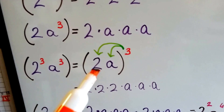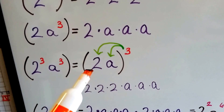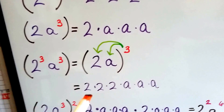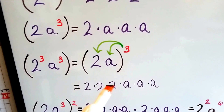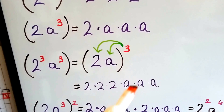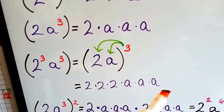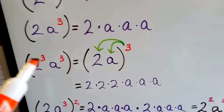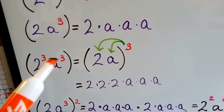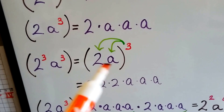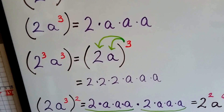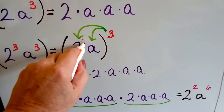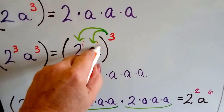We could do it easier by just putting them in parentheses and putting the three on the outside. It means the same thing as two times two times two times a times a times a. We could give them both the third power, or we could just put them in parentheses and put the third power on the outside. It's like there's a little invisible one here for each one of them.